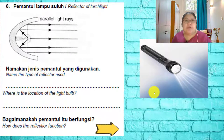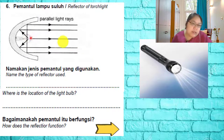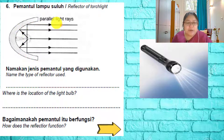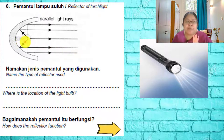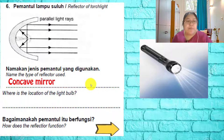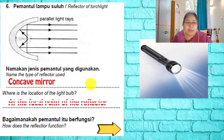Question six is about the reflector of a torchlight. Light from the bulb hits the curved mirror reflector and comes out as parallel rays. When the light ray becomes parallel, the bulb must be at the focal point — that is how it produces a parallel beam. The type of reflector used is a concave mirror, which concentrates and directs the light.